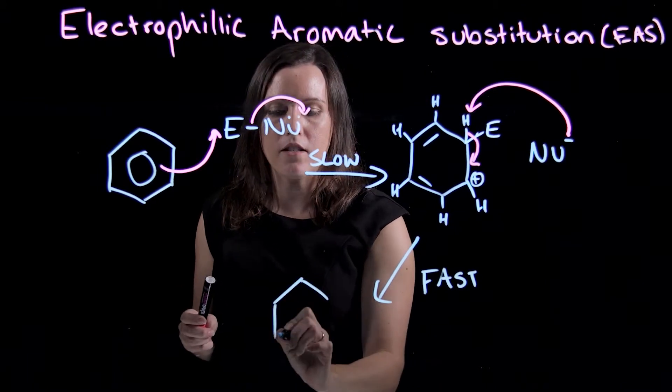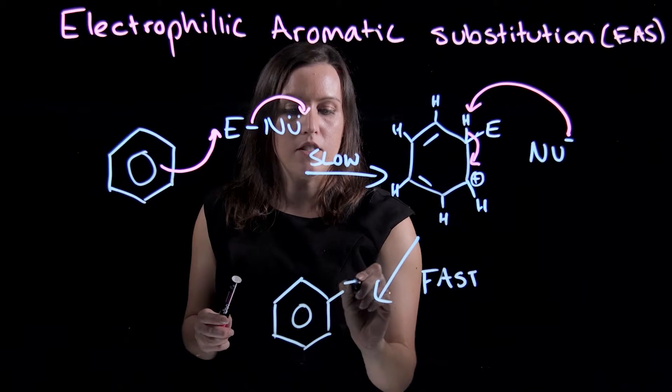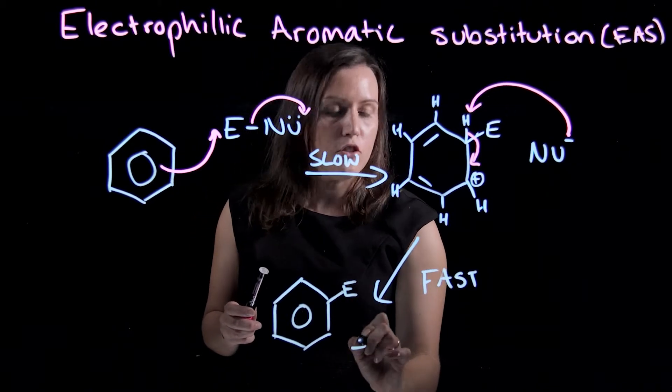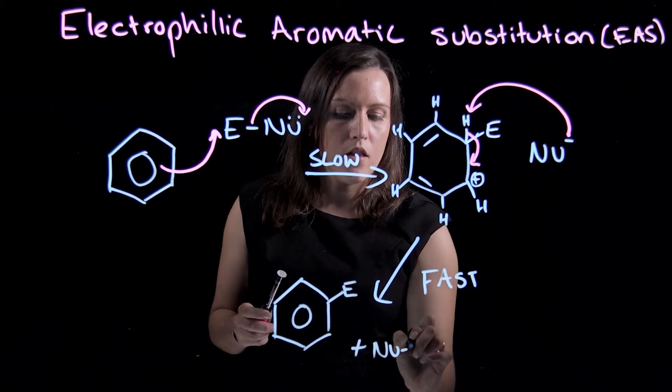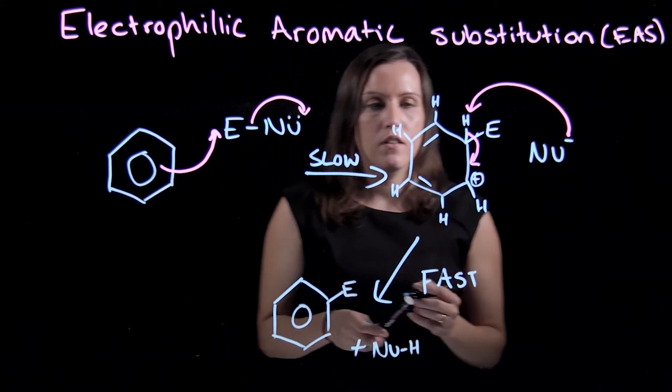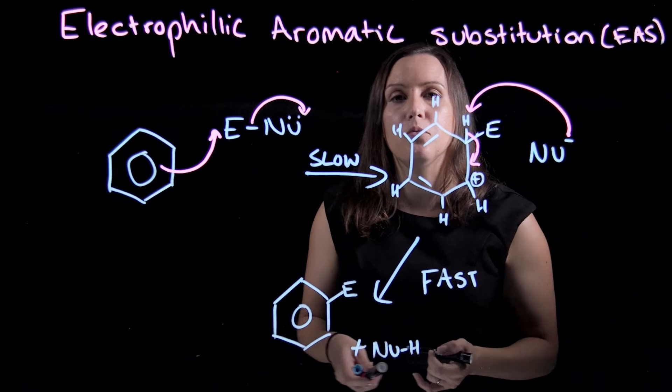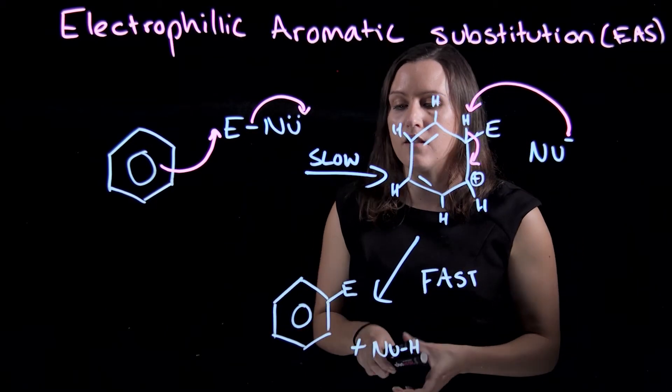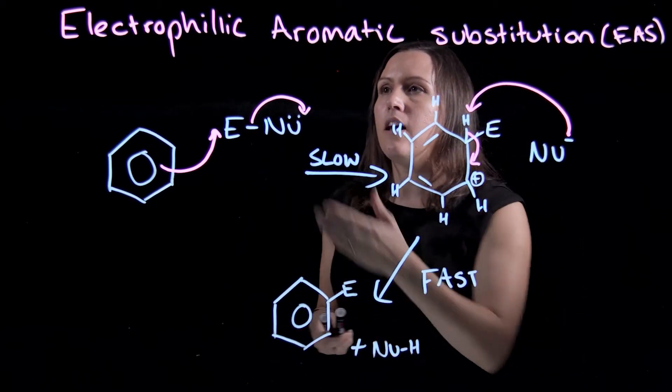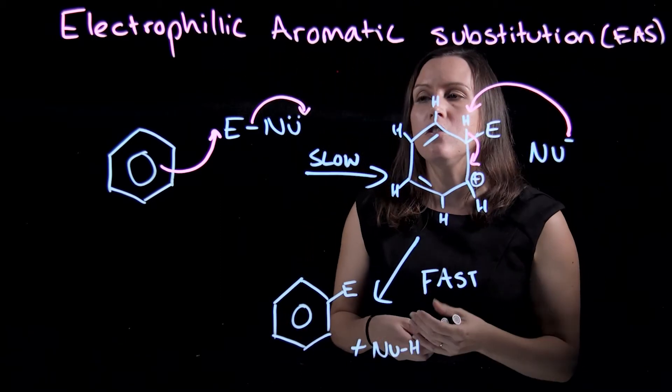And then you go back to your delocalized ring system and you just have your electrophile there, and your nucleophile would then have the hydrogen attached to it. I haven't drawn in the hydrogens on the starting and the final product because they're assumed with our line diagrams.